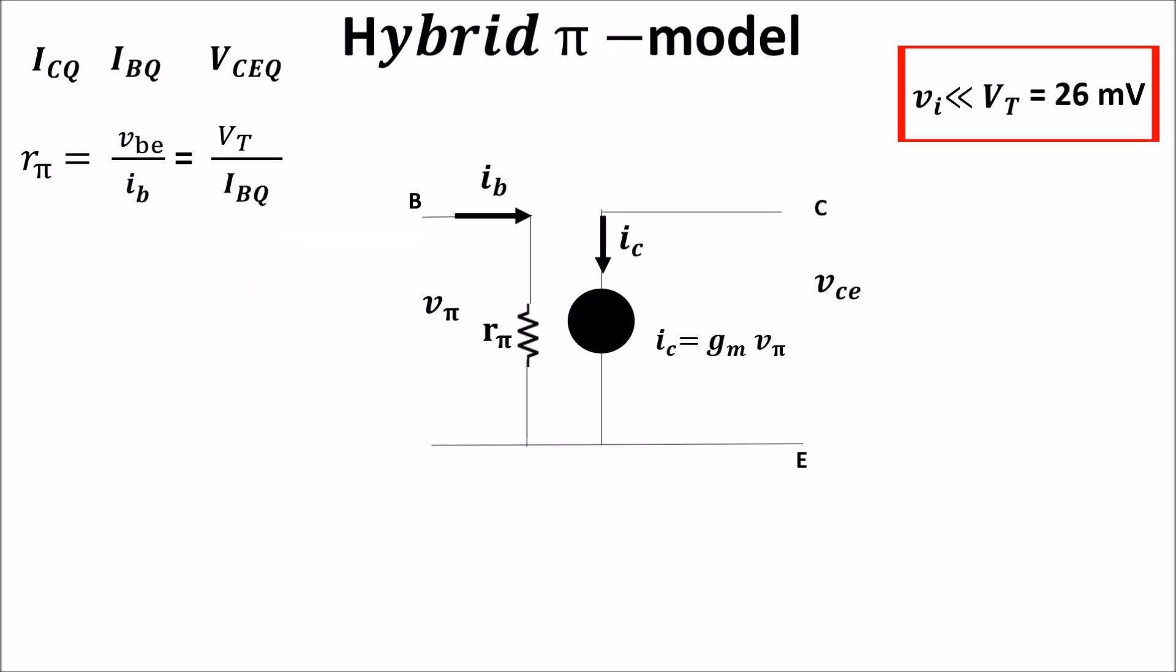So we have built this hybrid pi model where the collector current is related to the voltage across R pi, which is V pi, and we want to find the transconductance under our hypothesis.